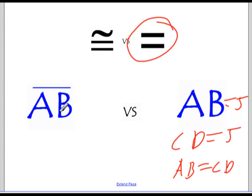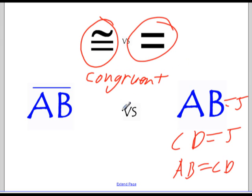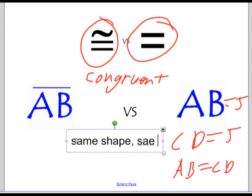This notation is totally different. This is line segment AB. That's the shape. This symbol here means congruent, congruent. Congruent means same shape, same size. They're exactly the same shape and same size. So same shape, same size. That's what congruent means.